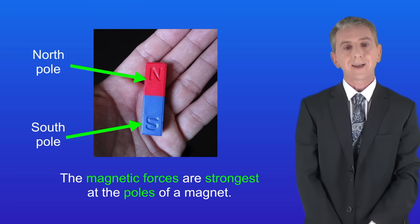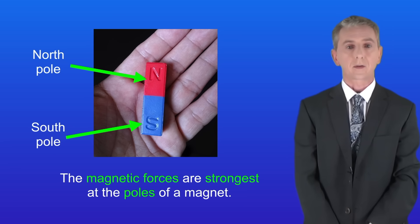Now a key point is that the magnetic forces are strongest at the poles of a magnet and we'll be looking at that again in the next video when we look at magnetic fields.